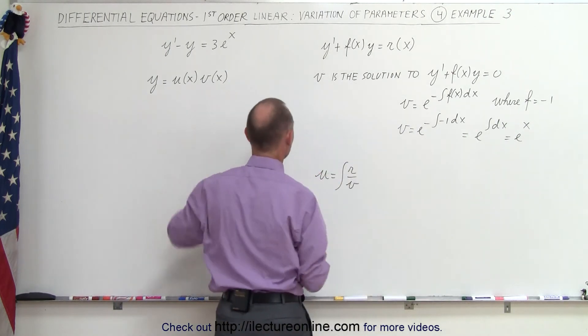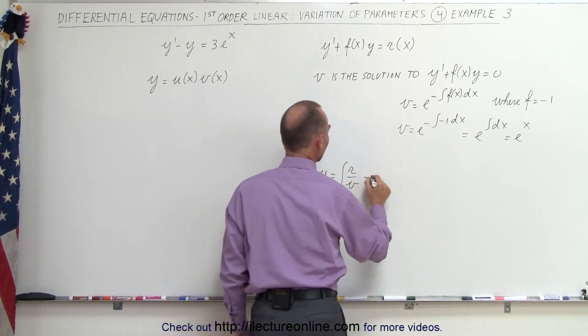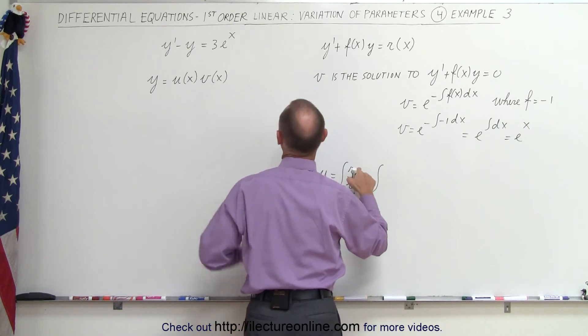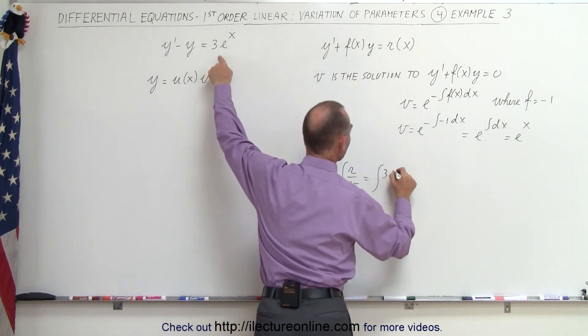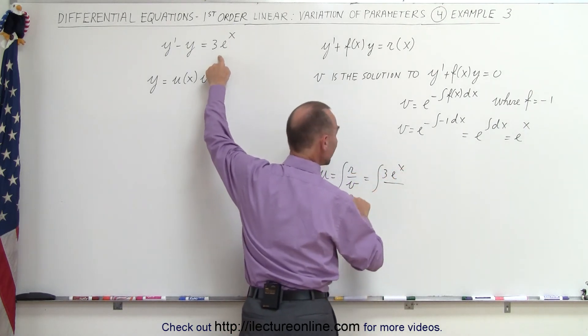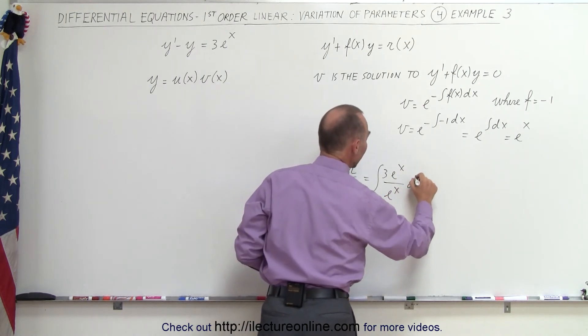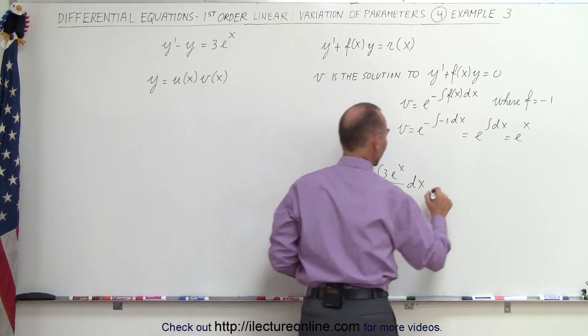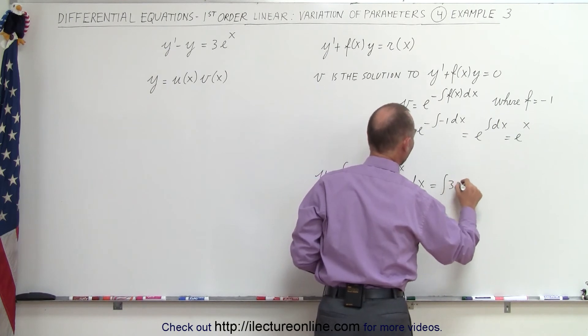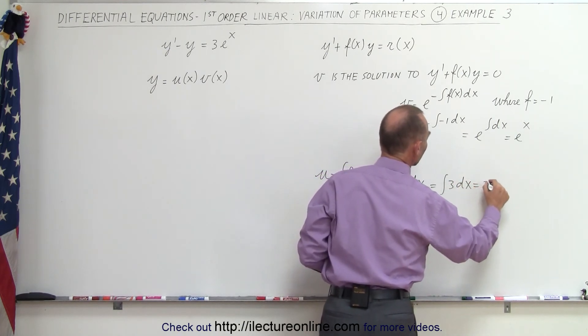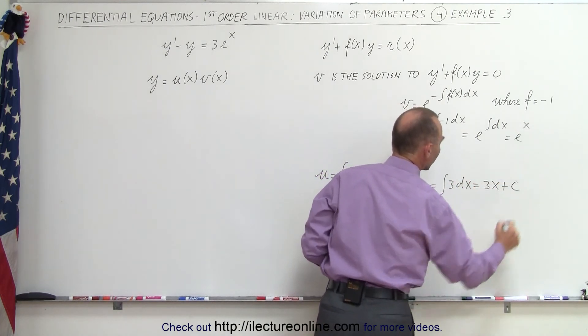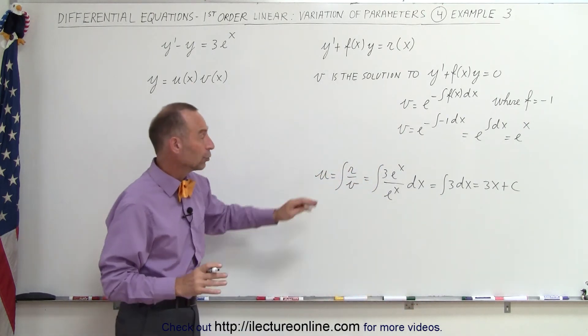Now, for u, we get this is equal to the integral of r, where r is equal to 3e to the x, divided by v, where v is equal to e to the x, dx. This is equal to the integral of 3 times dx, which is equal to 3x plus a constant of integration. So now we also found u.